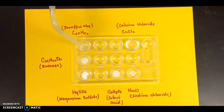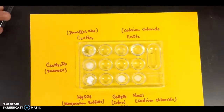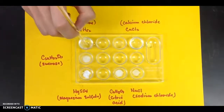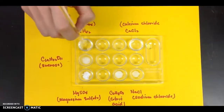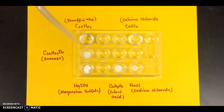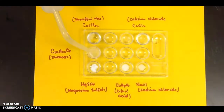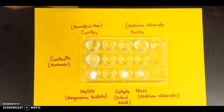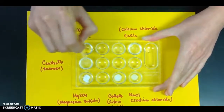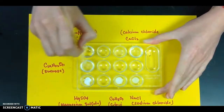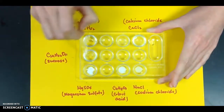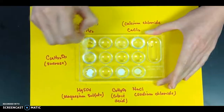We're going to do the same process with paraffin wax — add a little bit of water, then stir it with the stirring rod, and make our observations whether it's going to be soluble or insoluble. Next, I'm going to do the same process with sucrose — add a little bit of water and stir it with the stirring rod. Go ahead and decide whether sucrose is going to be soluble or insoluble in water.